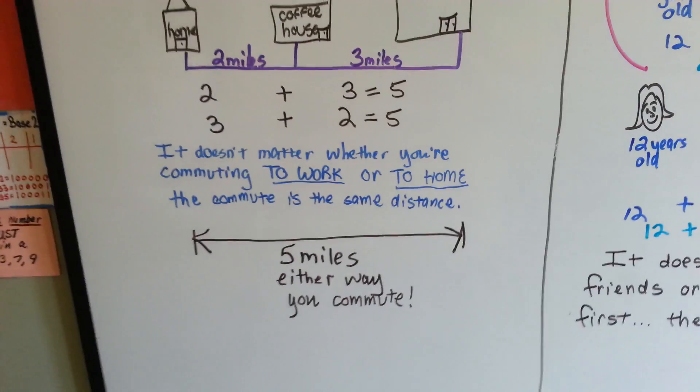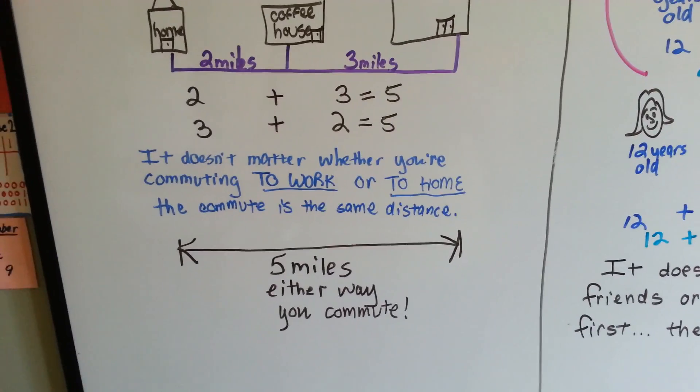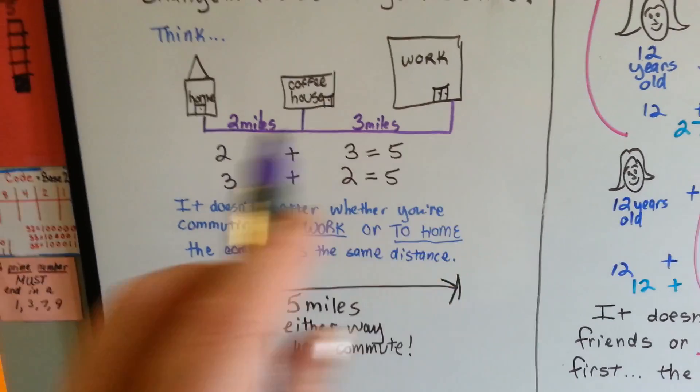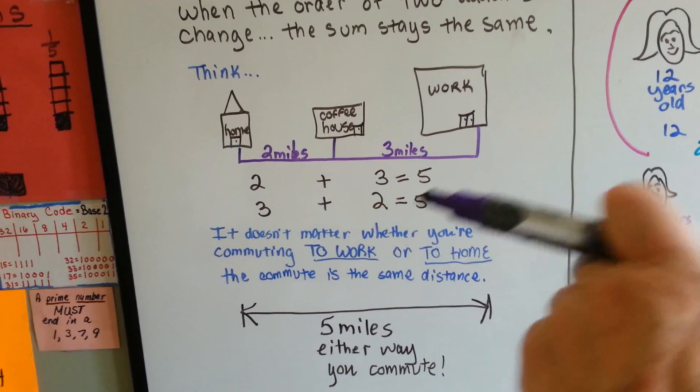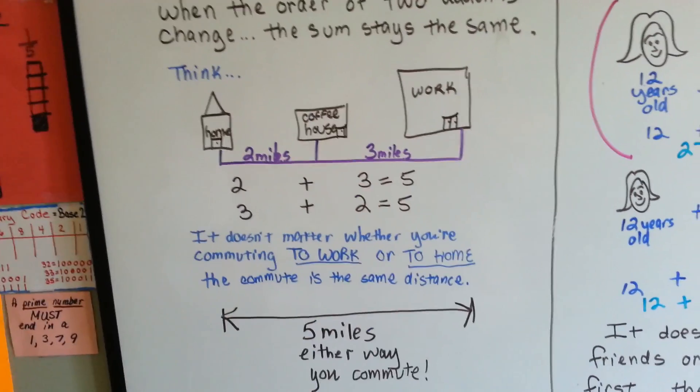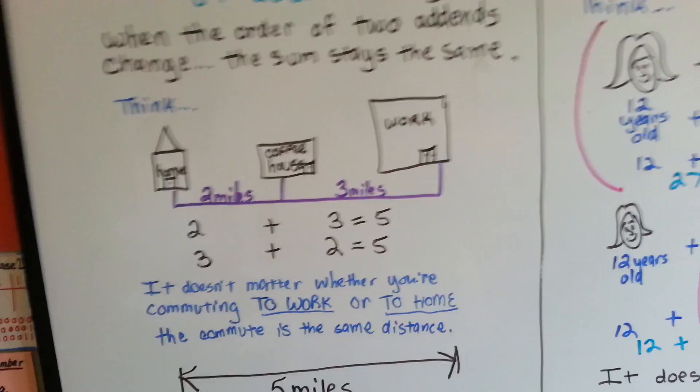People talk about what's your commute to get to work and say, oh, it's a half an hour. So commuting is like going back and forth, and it doesn't matter which direction you're going to work or to home. It's still going to be a five-mile distance.